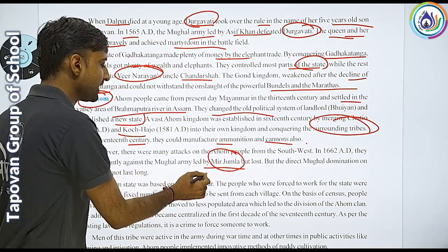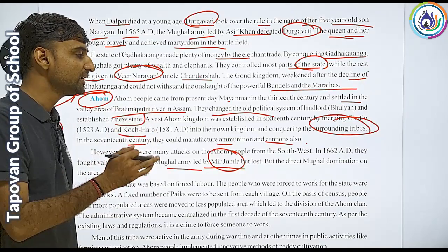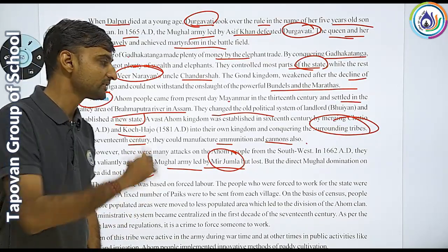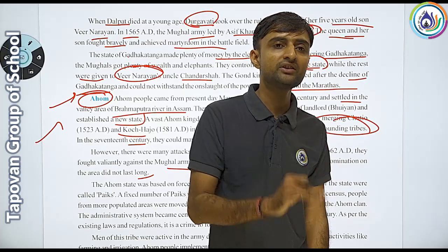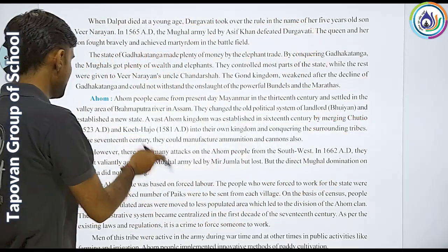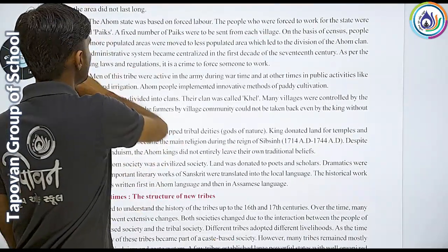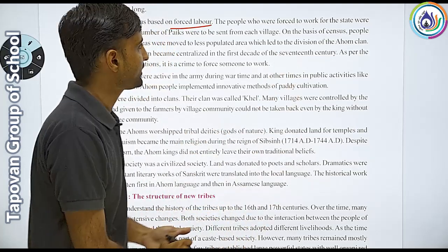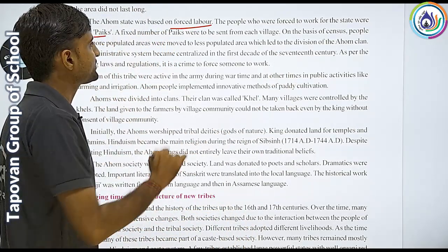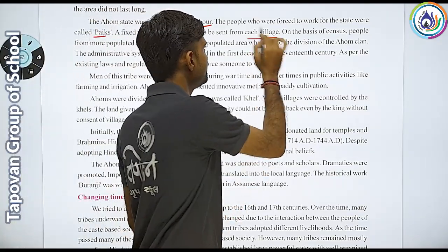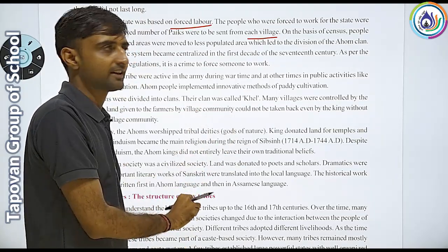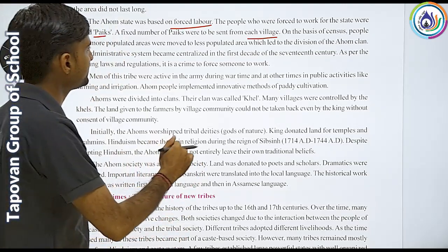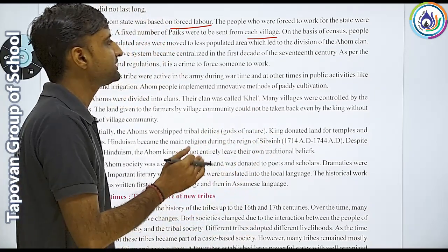However, direct Mughal dominance over the Ahoms did not last long. The Ahom state was based on forced labor. People who were forced to work for the state were called Paiks, and a fixed number of Paiks were to be sent from each village. On the basis of census, people from more populous areas were moved to less populated areas, which led to the division of Ahom clans.